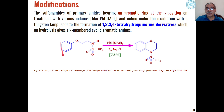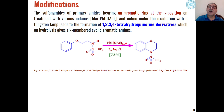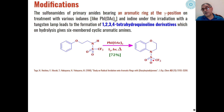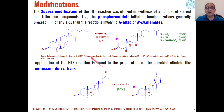Similarly, sulfonamides of primary amides having an aromatic ring at the gamma position, under Suárez modification, react with phenyl iodide acetate in the presence of iodine under photochemical conditions to give 72% of 1,2,3,4-tetrahydroquinoline derivatives. These sulfonamides on hydrolysis can lead to the formation of the corresponding amine products.